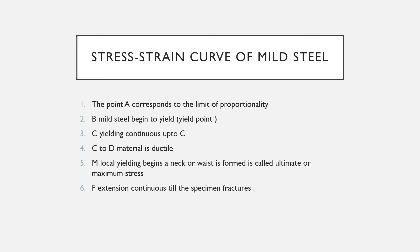Point C is where the mild steel continuously yields from B to C. From C to D, the material is acting ductile. At point M, local yielding begins and a neck is formed — this is called the ultimate or maximum stress. Finally at point F, the specimen fractures. The extension continues until the specimen fractures. This is how the mild steel stress strain curve is studied.